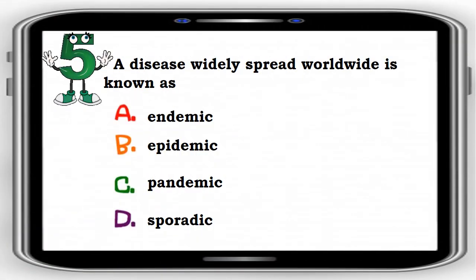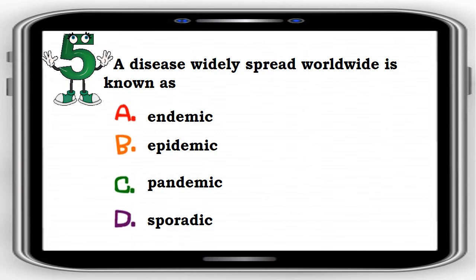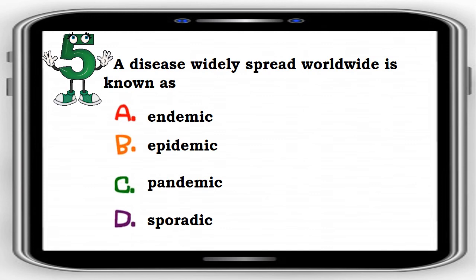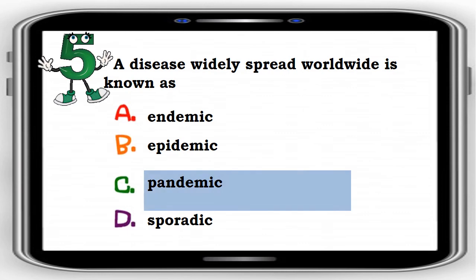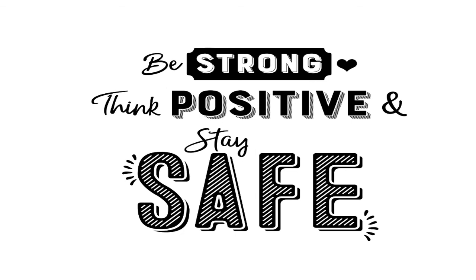Number 5. A disease widely spread worldwide is known as: A. Endemic, B. Epidemic, C. Pandemic, D. Sporadic. The correct answer is letter C. Pandemic.